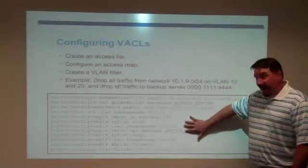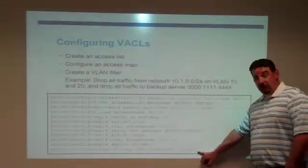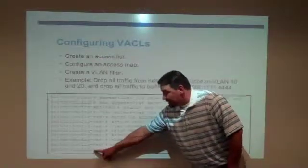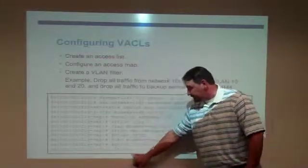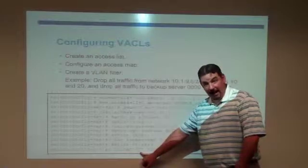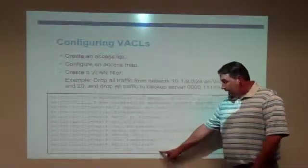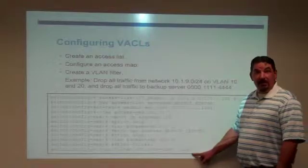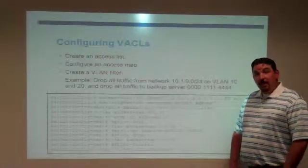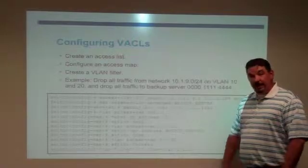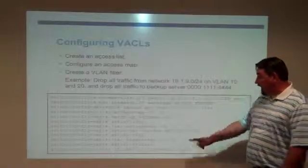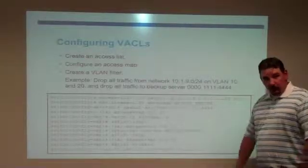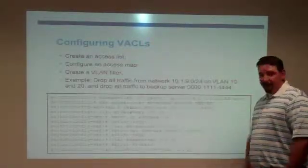And then I apply that VLAN access map to a list of VLANs. So I go through, again, under global config, I say VLAN filter, XYZ is the name of that VLAN access map that we created. And we're going to apply that to all VLANs. In this case, VLAN 10 and VLAN 20. So all traffic as it goes through VLAN 10 and 20, if it comes from this subnet, it's going to be dropped. Or if it's going to this individual server, it's going to be dropped. All of the traffic is going to be allowed through.